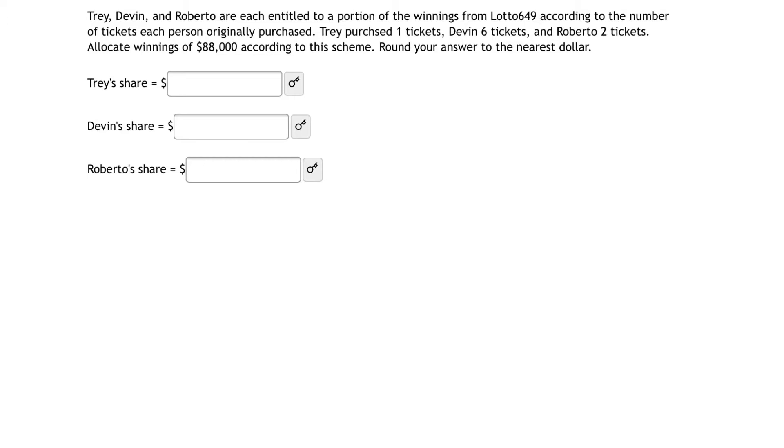So what are we talking about in this My Open Math problem? One way to solve this problem is using proportions. That is, the winners of this Lotto are going to get a winning according to the number of tickets or the proportion of tickets that they purchased.